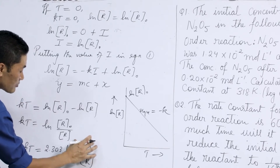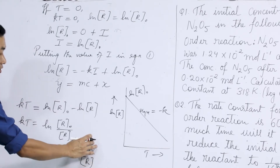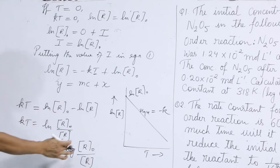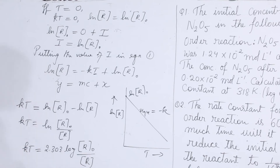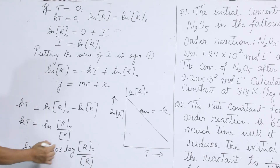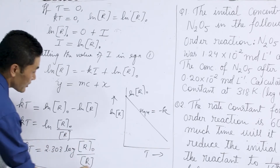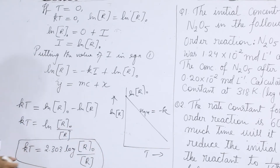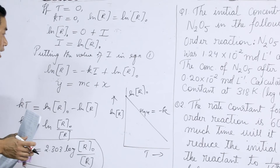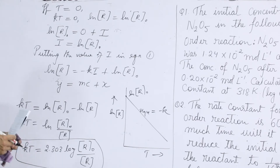Converting to base-10 log, we can write: kt = 2.303 log(R₀/R). Remember R₀ represents the initial concentration of the reactants and R is the final concentration. This is one form of the integrated rate equation for a first order reaction.